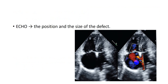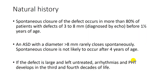Echocardiography is the definitive diagnostic tool for ASD. The position, anatomy, and hemodynamic effect of the defect can all be assessed by echo. This is the left atrium, right atrium, right ventricle, and left ventricle, with the interatrial septum. You can see a large defect between the LA and RA. In addition, there is dilatation of the right side of the heart more than the left side. Echo provides a definitive diagnosis for ASD.